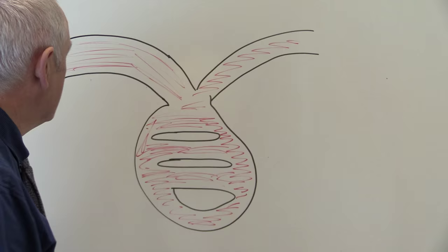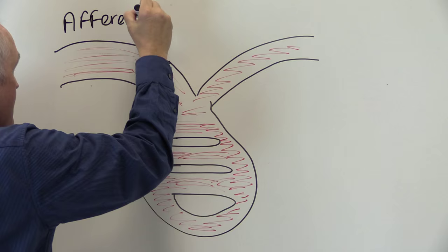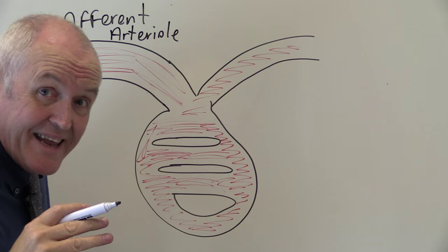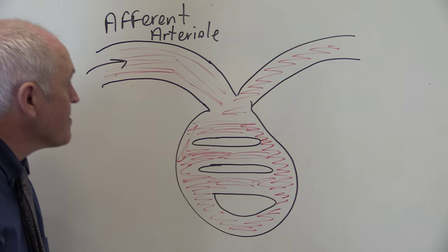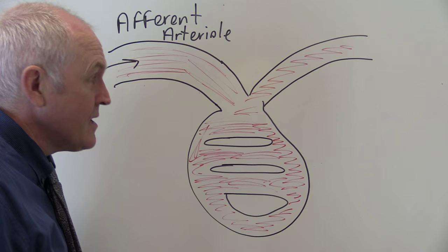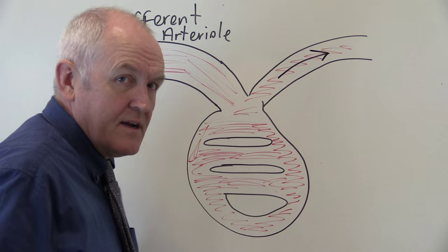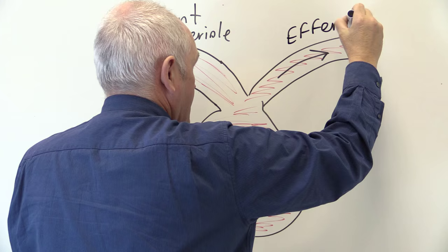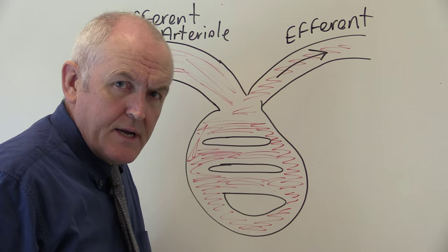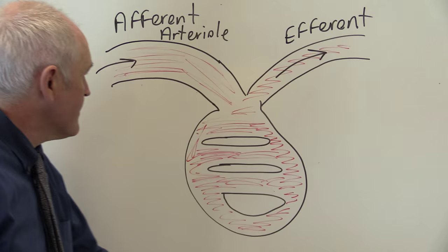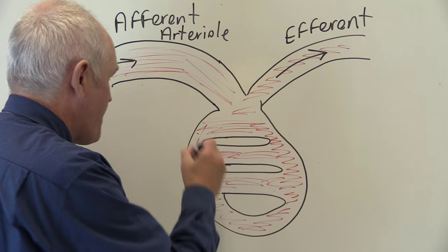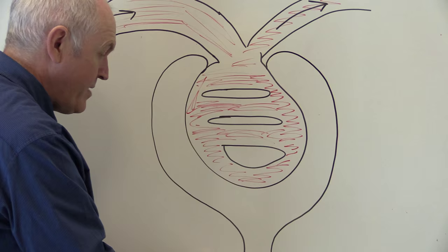Let's put a few labels on that so we remember what we're talking about. This is the afferent arteriole — so the blood is going in via the afferent arteriole, meaning the afferent arteriole is a branch of the renal artery. The blood is circulating through the capillaries of the glomerulus and leaving via the efferent arteriole. The efferent arteriole actually goes on to form the peritubular capillaries, as we'll see later. This whole structure is surrounded by a capsule and goes on to a tube which is the start of the nephron.